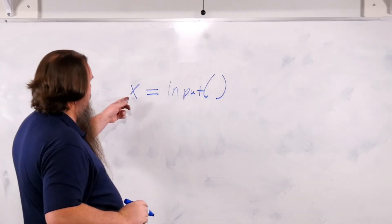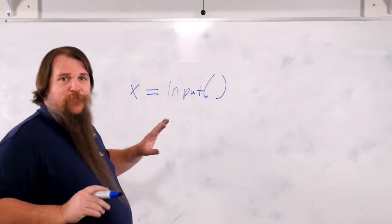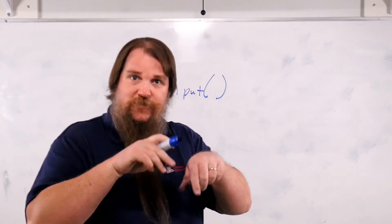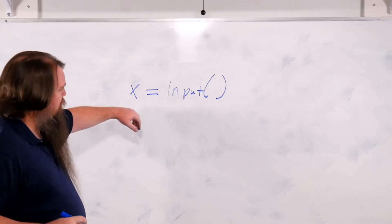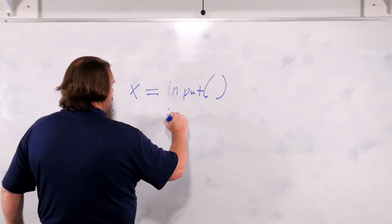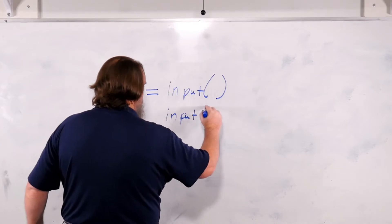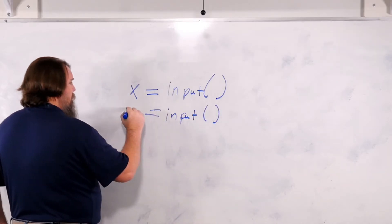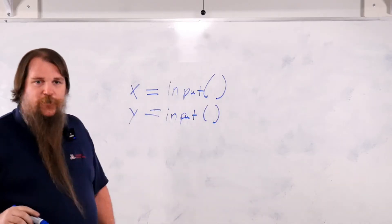So if we say x equals input, your program freezes here until the user has typed some things. When it hits return, it will finally return. Now if we call this again, then we will read a second line of input and store it into another variable.